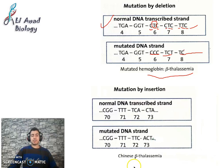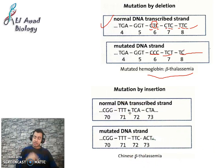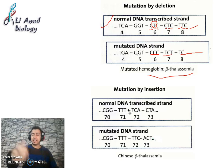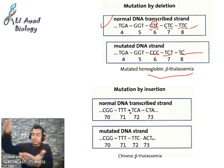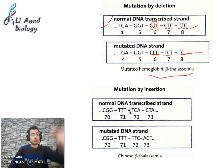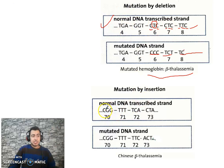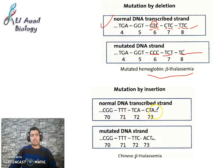Mutation by insertion, or addition. When I say mutation by insertion, one or more nucleotides are added at the level of the DNA. It is possible for more than one nucleotide to insert itself into the DNA. For example, this is a normal sequence: GGG, TTT, TCA, CTA.